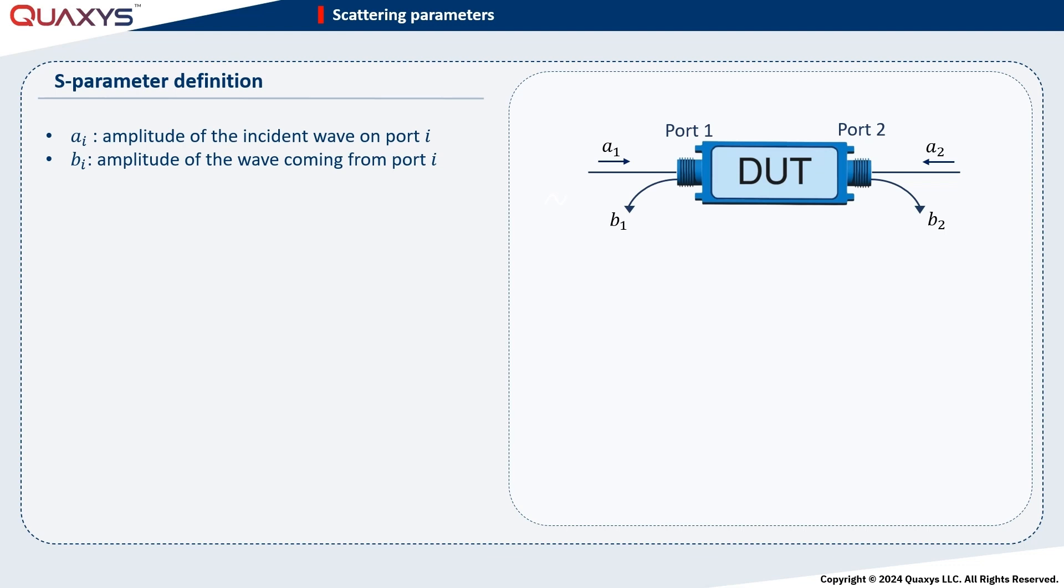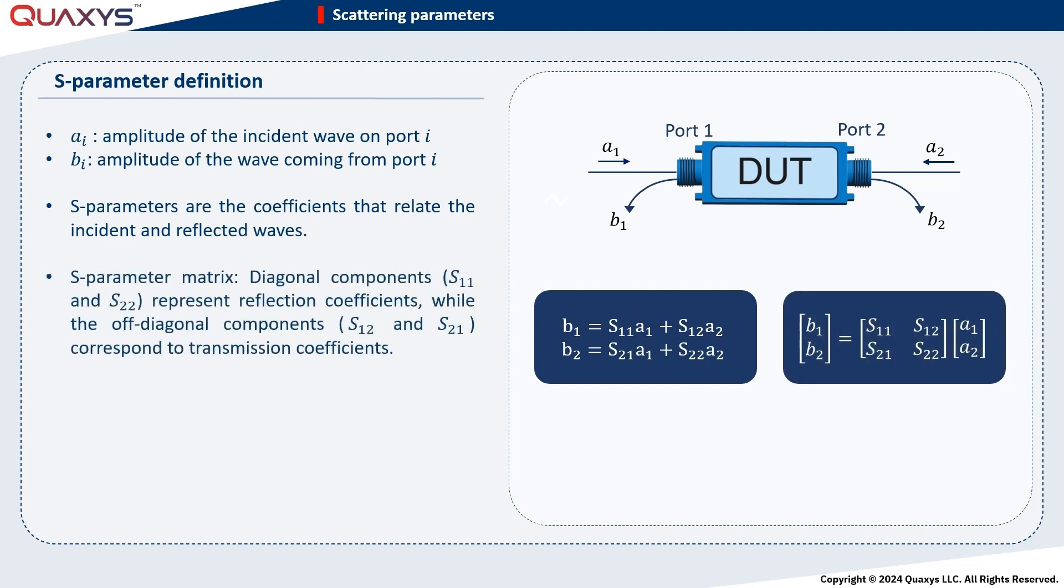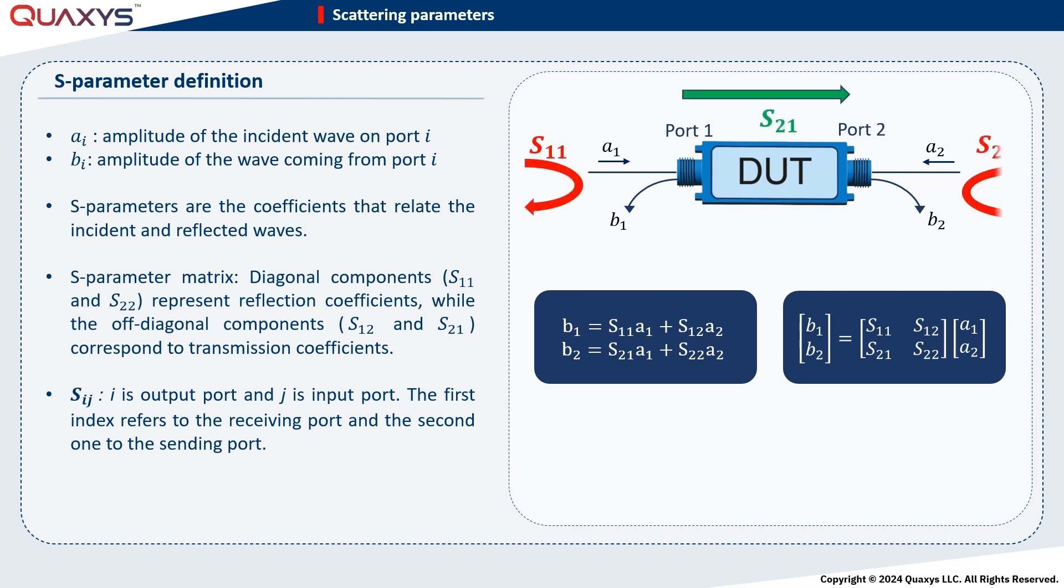The S-parameters serve as coefficients connecting A and B amplitudes. Represented in matrix form, it is known as the S-parameter matrix. The diagonal components signify reflection coefficients, while the others represent transmission coefficients. Note that the first index in the S-parameter refers to the receiving port, and the second one to the transmitting port. Thus, S-2-1 is the transmission coefficient from port 1 to port 2.